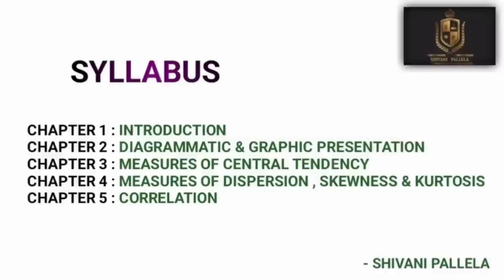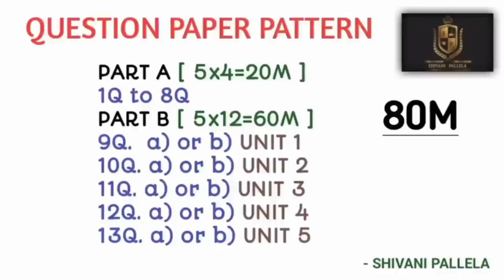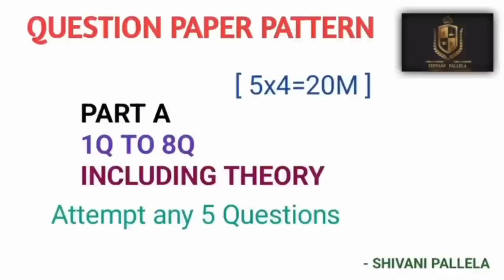We will discuss all the important things in this video. Regarding the question paper pattern: in Part A you need to attempt five questions, each carrying four marks. In Part B you need to attempt five questions, each carrying 12 marks, and each question will have an internal choice. For example, the ninth question is from Unit 1, tenth from Unit 2, eleventh from Unit 3, and so on. In Part A, questions 1 to 8 are given and you need to attempt five, which includes both theory and problematic questions.